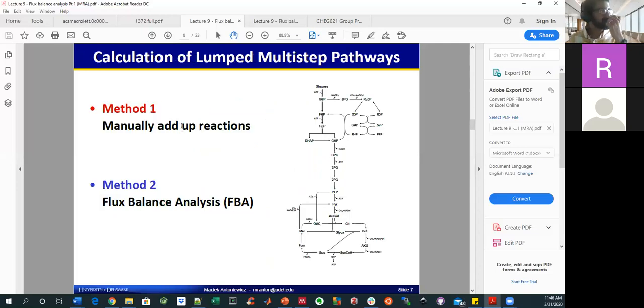And so the way Machek frames it here is that you can think about these lumped multi-step pathways, the way that we have been doing, where you manually add everything up. And then this alternative method is flux balance analysis. And I think that makes sense. And there's probably more to what Machek was trying to say here. But flux balance analysis is a tool for doing more than just adding up reactions. I think it would be very difficult, for example, to do any kind of optimization or gene knockout predictions with just this sort of manual approach.